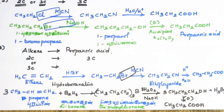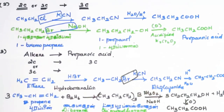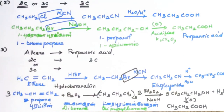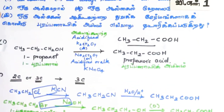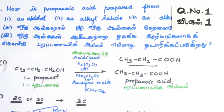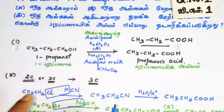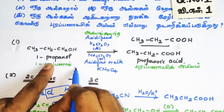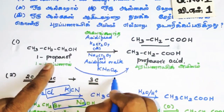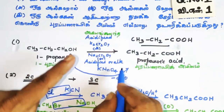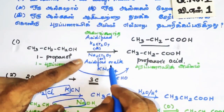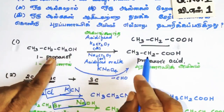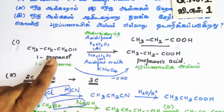These are the methods for preparing propanoic acid. Whether the question asks you to start from alcohol, alkyl halide, or alkene, you convert to the appropriate intermediate and then use strong oxidizing agents — acidified K2Cr2O7, KMnO4, etc. — to convert the alcohol directly to the acid.